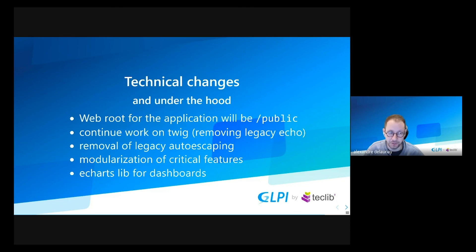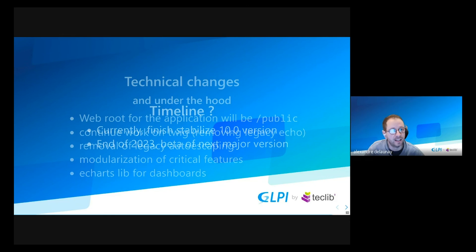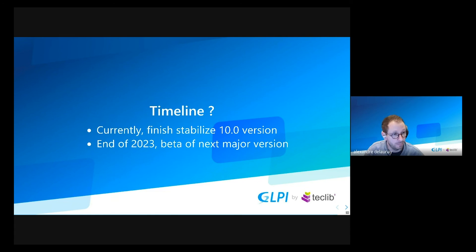A last slide to let you know we continue to work on improving the core of GLPI. The most impactful for you will be the move of the web root of the application — it will now be a subfolder named public. Thereby, all of our subfolders like the files folder, for example, will not be available on the web when the web server is not well set up. The next points are mainly legacy codebase we need to clean. And to finish, we move to a new charting library called ECharts. It's simpler to use on our side, and you will probably appreciate the new charts and their interactivity. At the moment, we're still working actively on bug-fixing the version 10, as this last brought big changes, especially on the Assistant path. But we aim to work in the coming year fully on the new version.